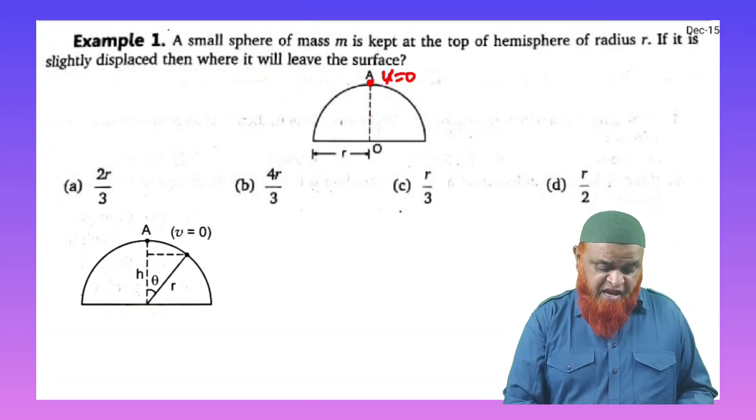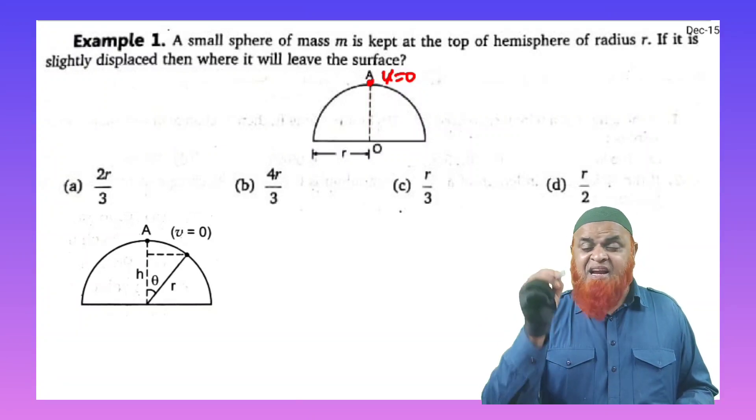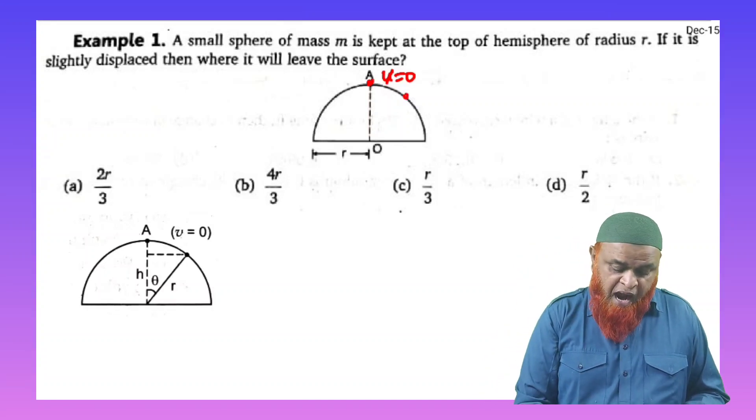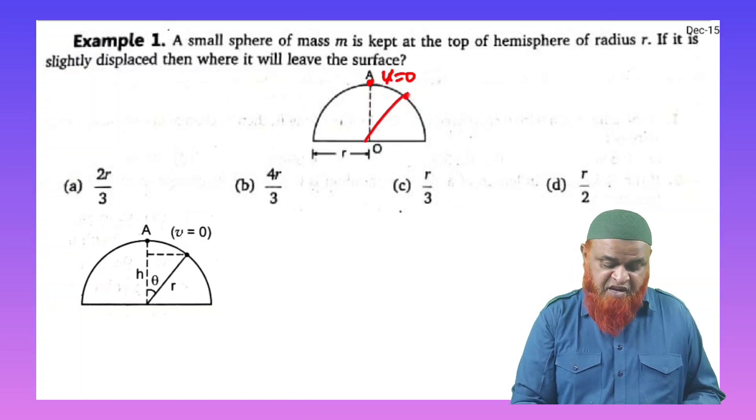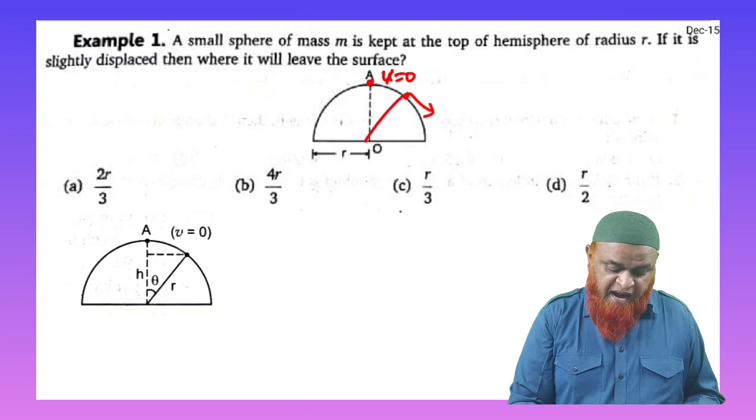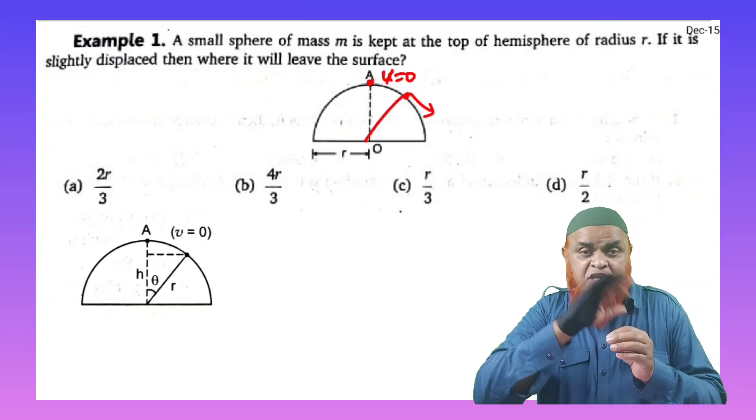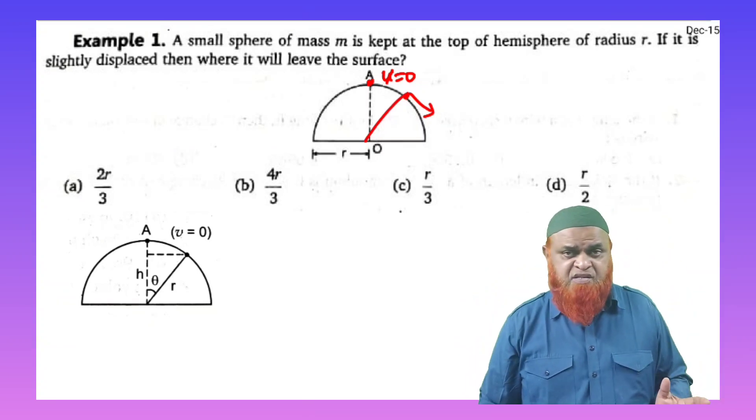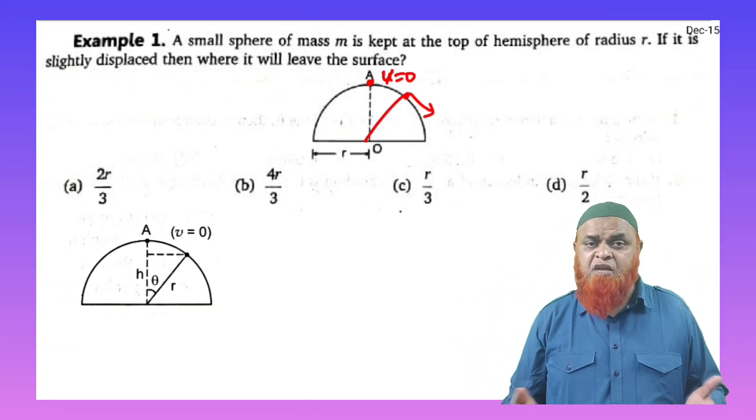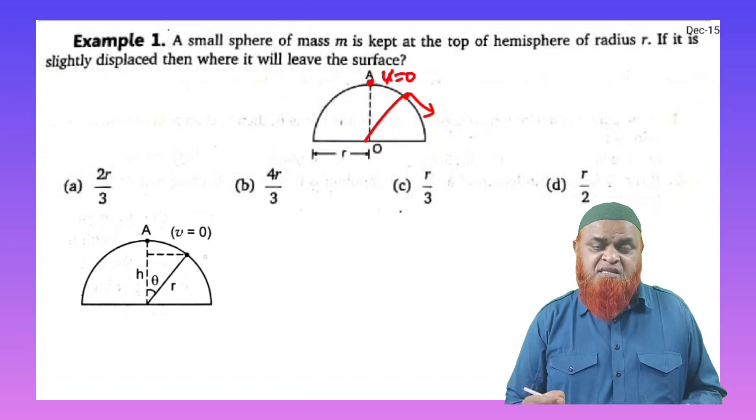For example, at this point A, if you keep any body and its velocity is going to be 0, after how much distance on the hemispherical surface it will travel and it will leave the hemispherical surface. It has to leave the hemispherical surface and fall as a freely falling body. So let us see what is that height here.